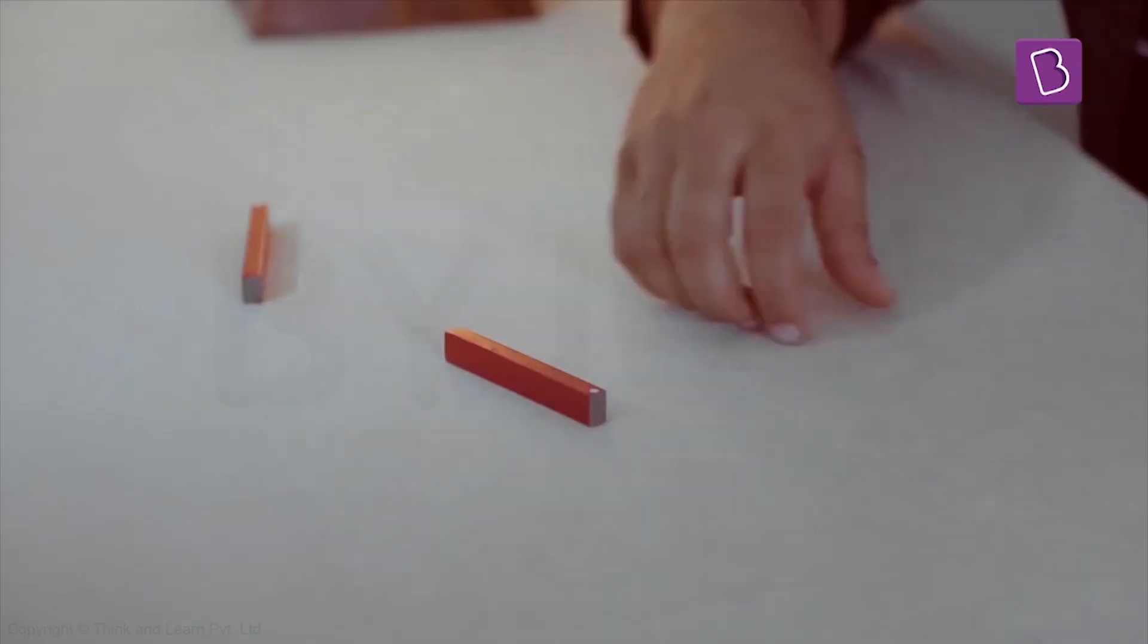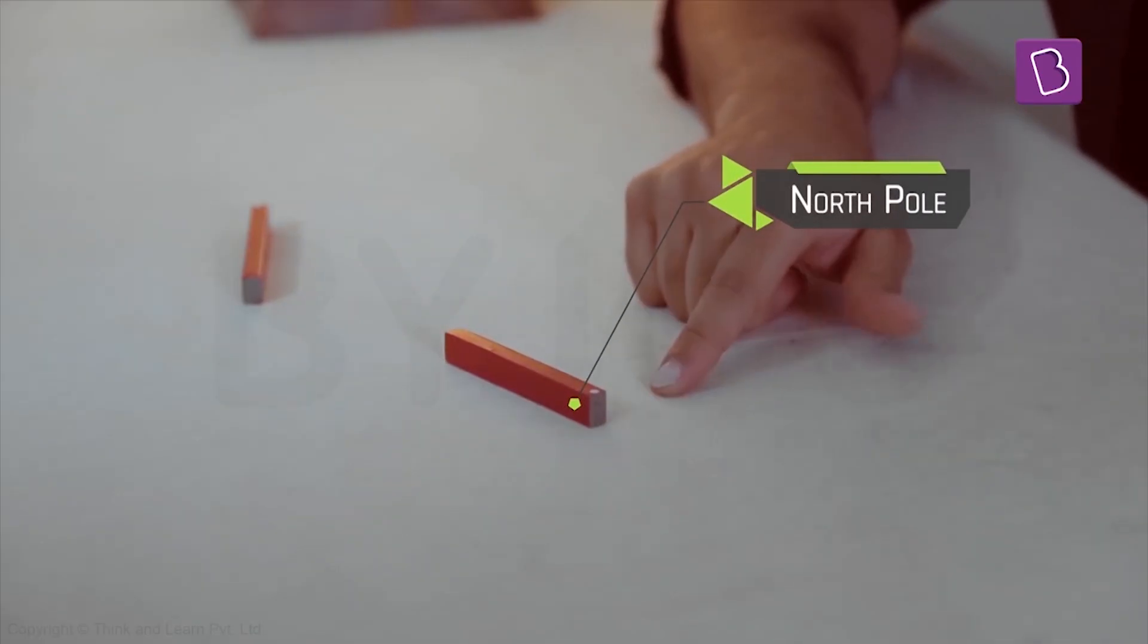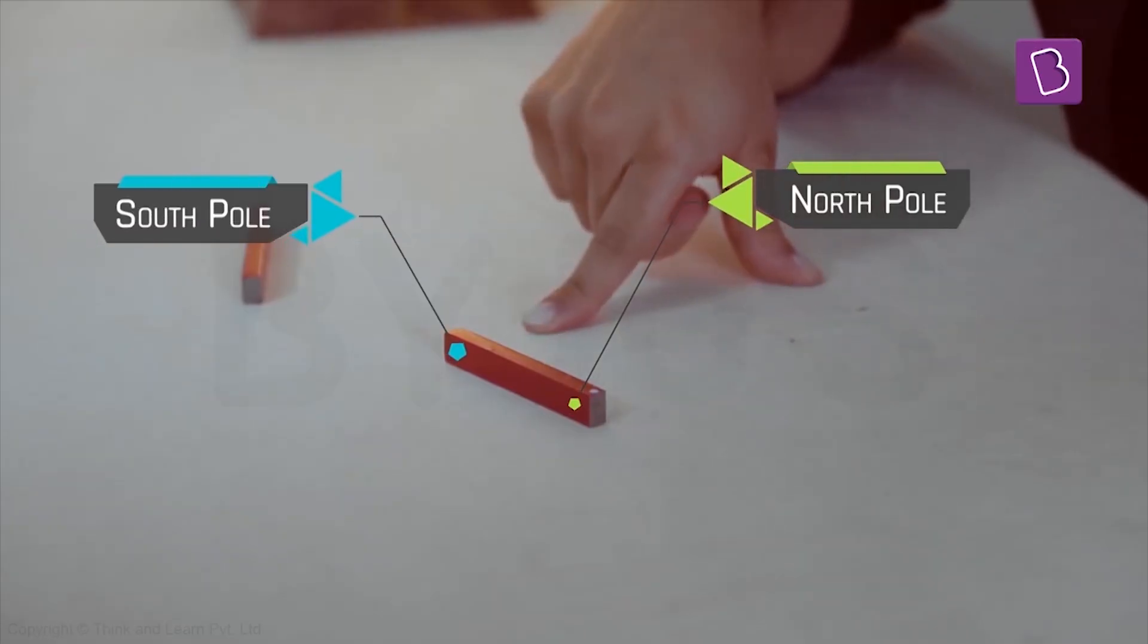So this is what you call a bar magnet. Now any magnet has two sides which you call poles. It's called the north pole and the south pole. Now if you look at this magnet, the north pole is marked with this white dot. So this is the north pole and this is the south pole.